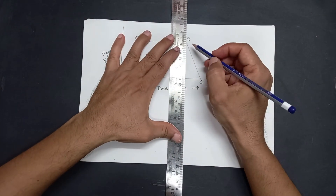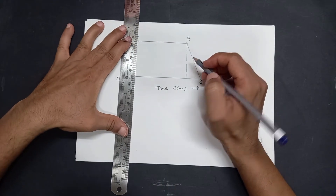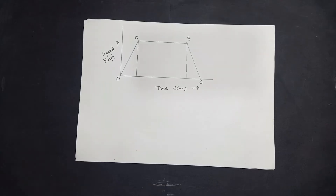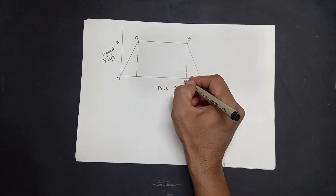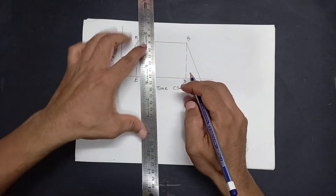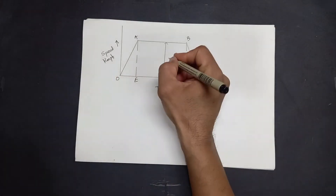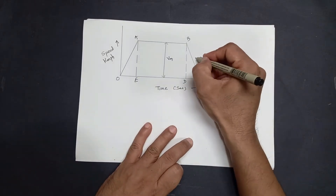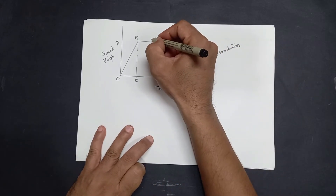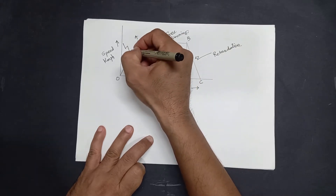For simplicity we divide our trapezoidal speed-time curve into three parts: first part is acceleration, second part is free running, and third part is retardation. We have points D and E. We have maximum speed during free running, which can be written as Vm. The region indicating retardation, the region for free running, and the region for acceleration are all labeled.